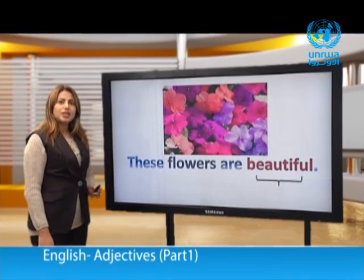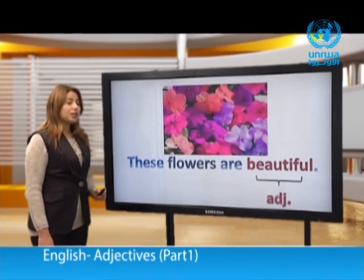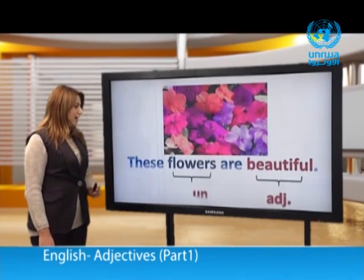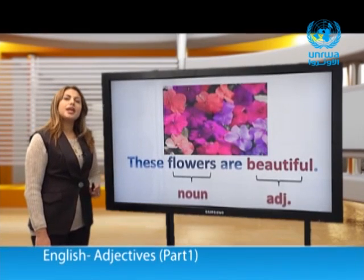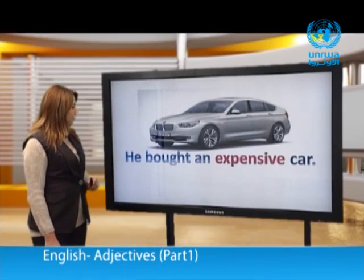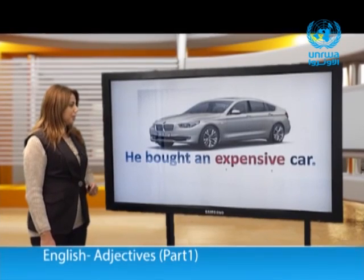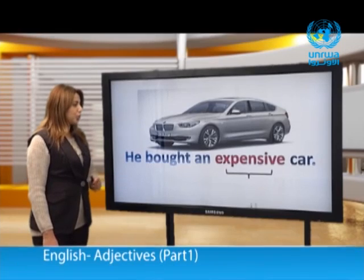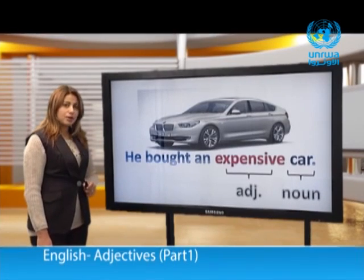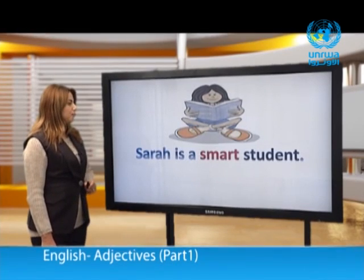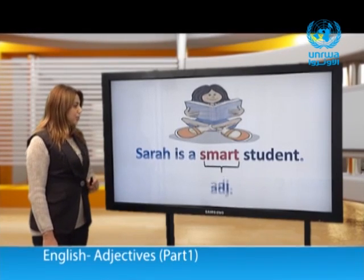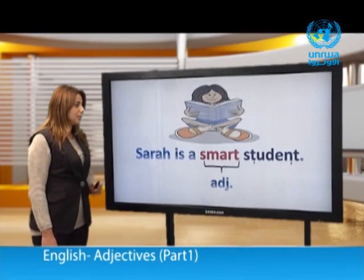These flowers are beautiful. The word 'beautiful' is an adjective. What does it describe? It describes the flowers, so 'flowers' is a noun. He bought an expensive car. 'Expensive' is an adjective that describes the word 'car,' which is a noun. Sarah is a smart student. The word 'smart' is an adjective that describes the noun 'student.'